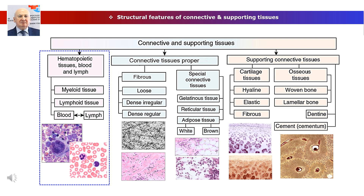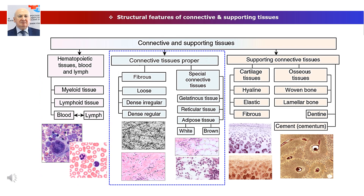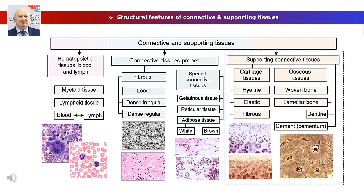Connective tissues proper are the most widely represented in the organism, varying in the ratio of the basic amorphous substance and fibers, as well as the orientation of fibers. Within this group, loose and dense fibrous connective tissues are distinguished, as well as connective tissues with special properties: adipose, reticular, and mucous tissues. Supporting connective tissues are characterized by a high density of intercellular substance; they are subdivided into three types of cartilaginous tissue and two types of bone tissue, as well as cement and dentin of the tooth.